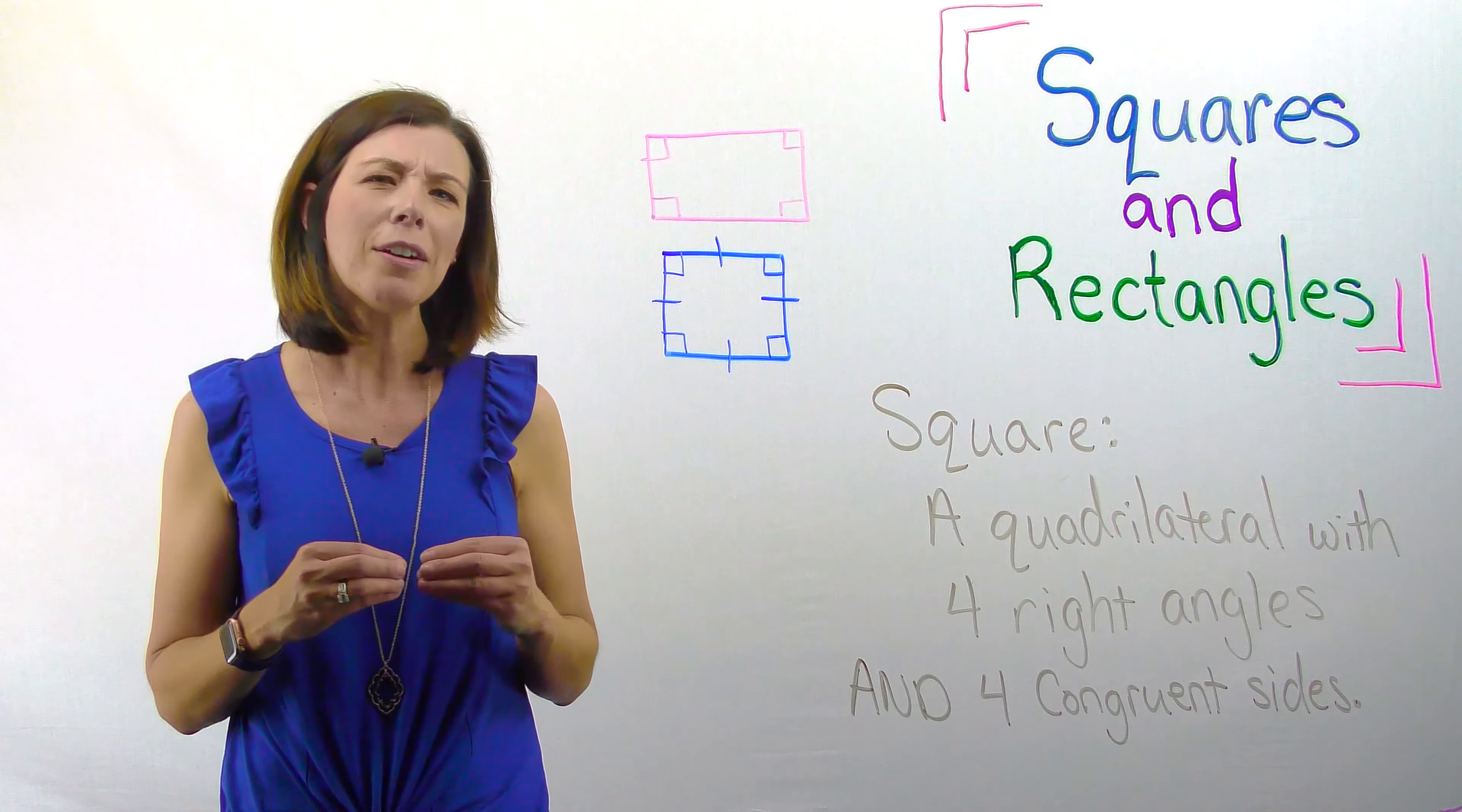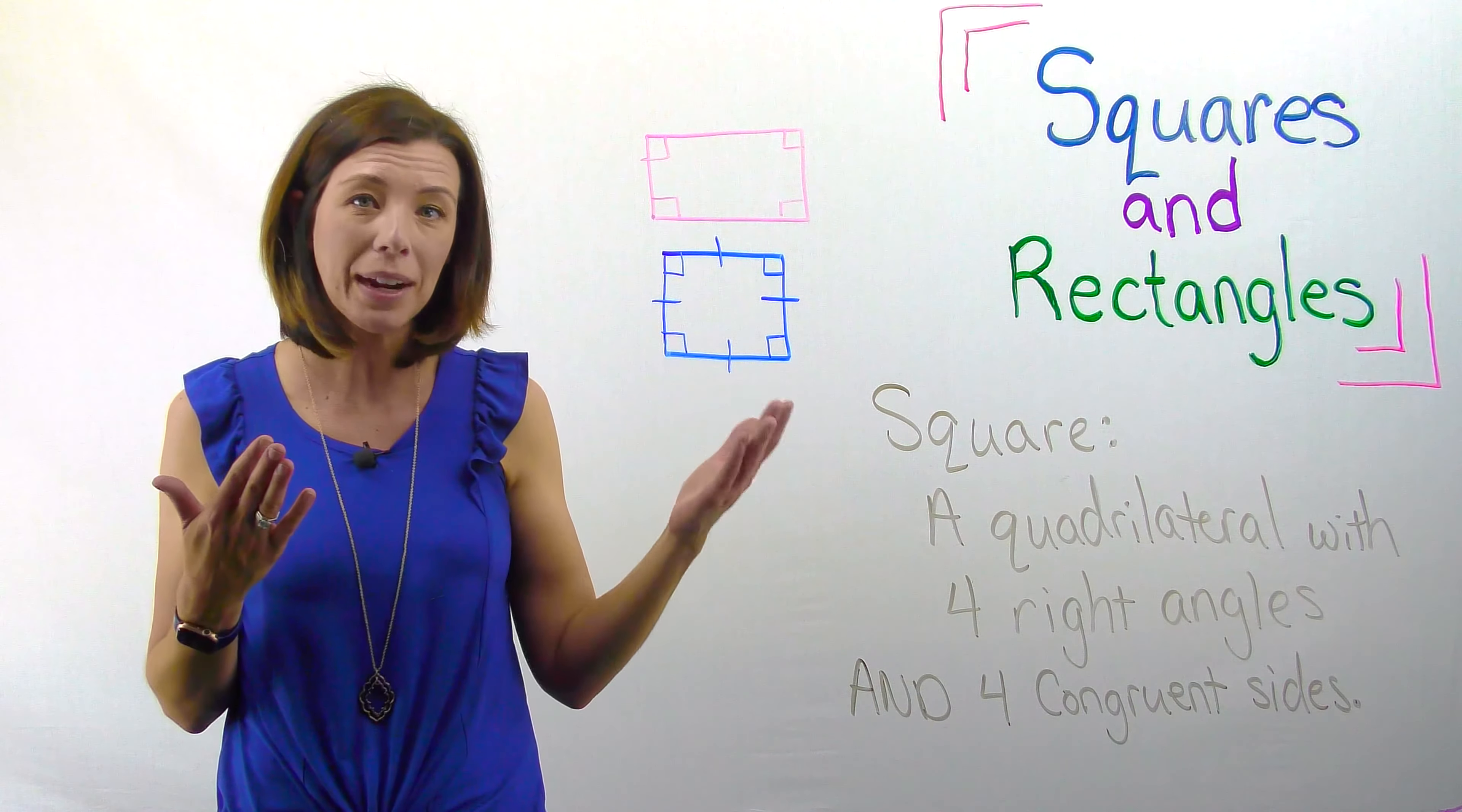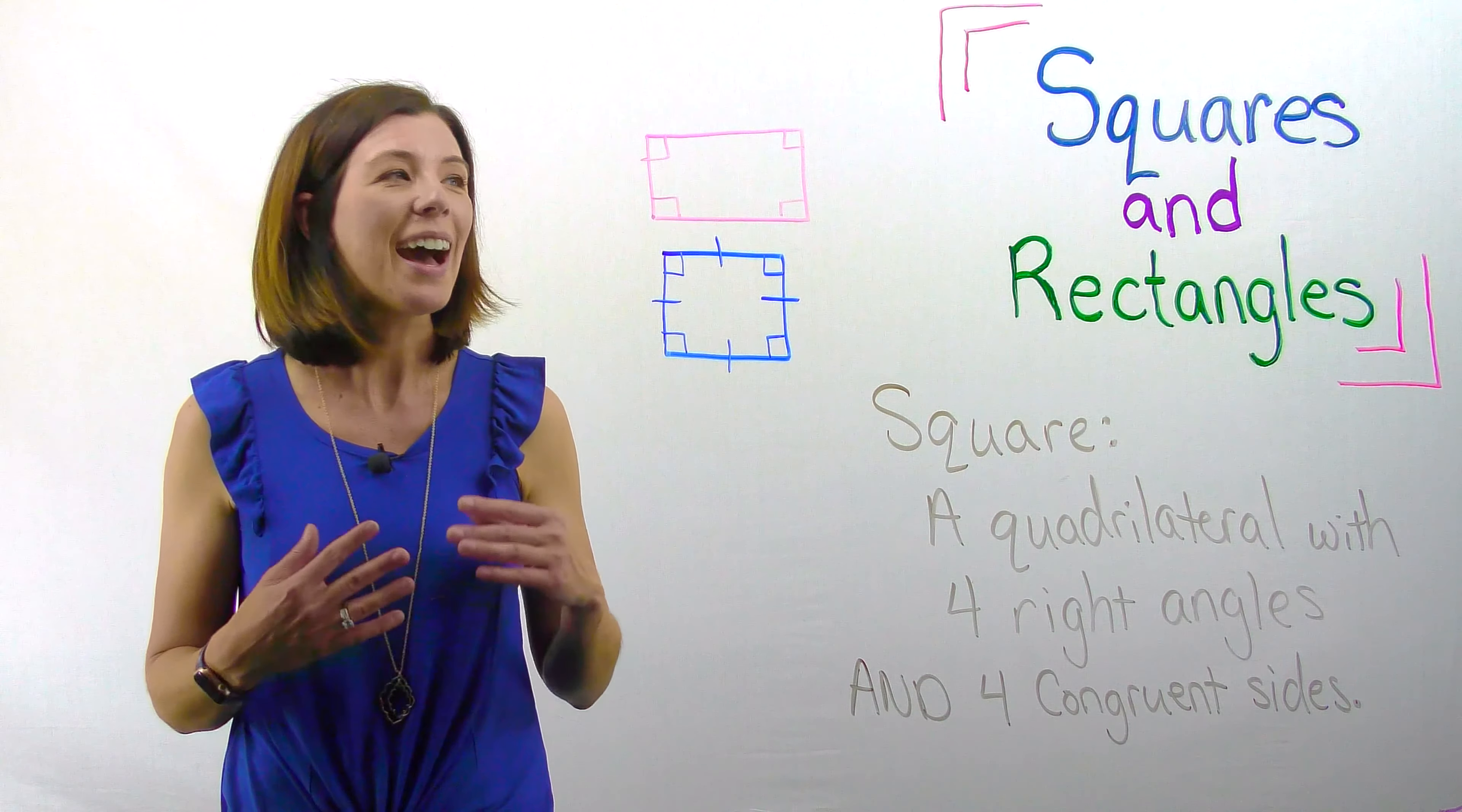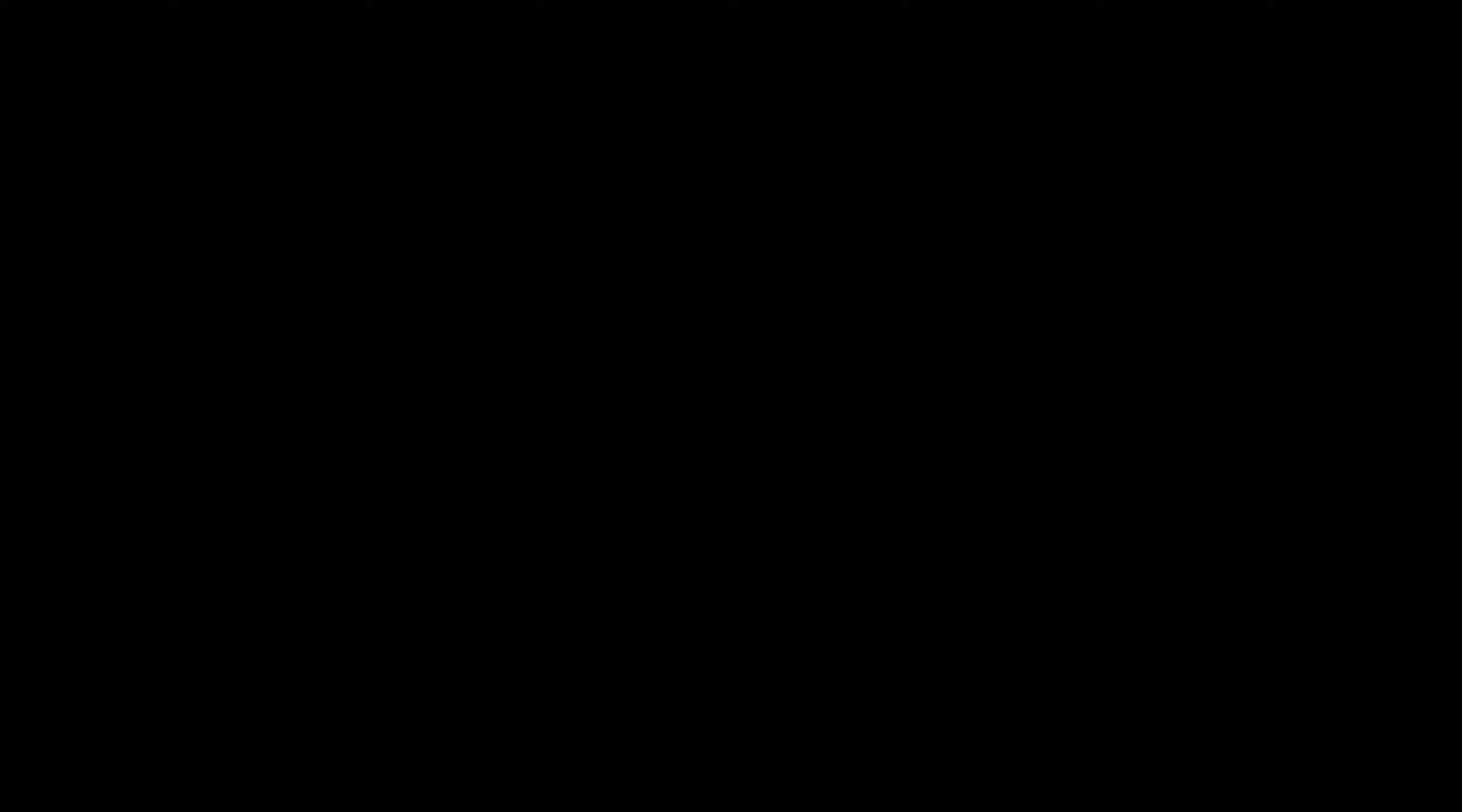One way to think about this is in a hierarchy. If I think of rectangles as the bigger, more general idea, then the square is a special case of a rectangle. It wouldn't work the other way around—the square wouldn't be the big idea and the rectangle a special case of that—because the rectangle is actually more broad and the square is more specific.